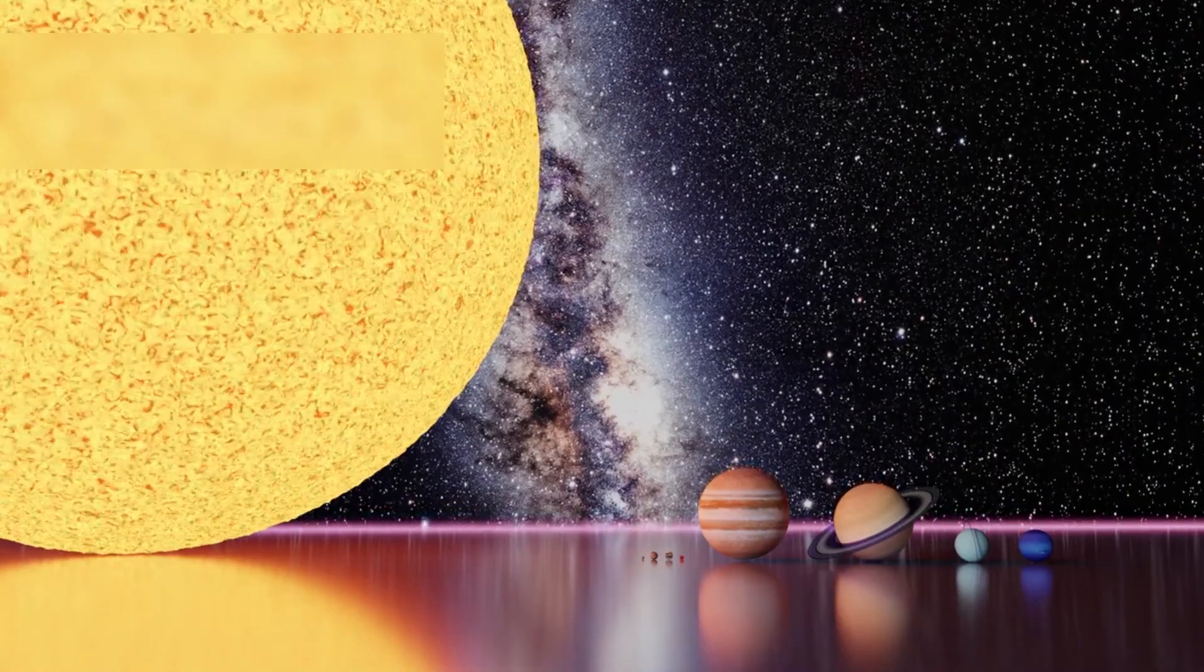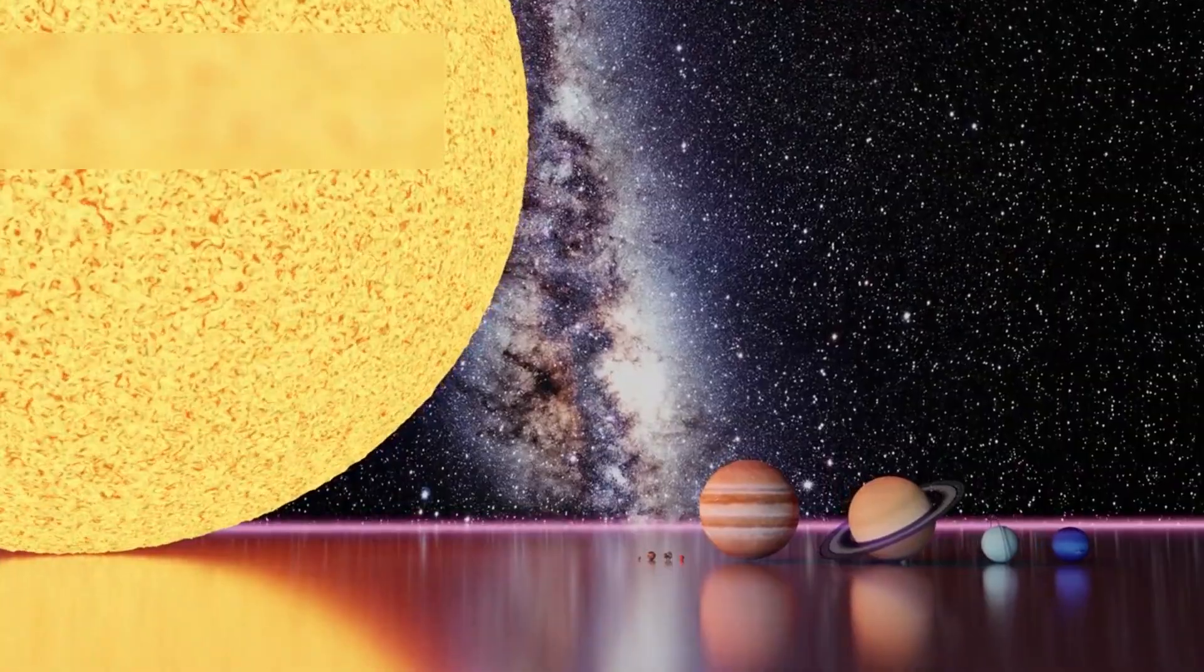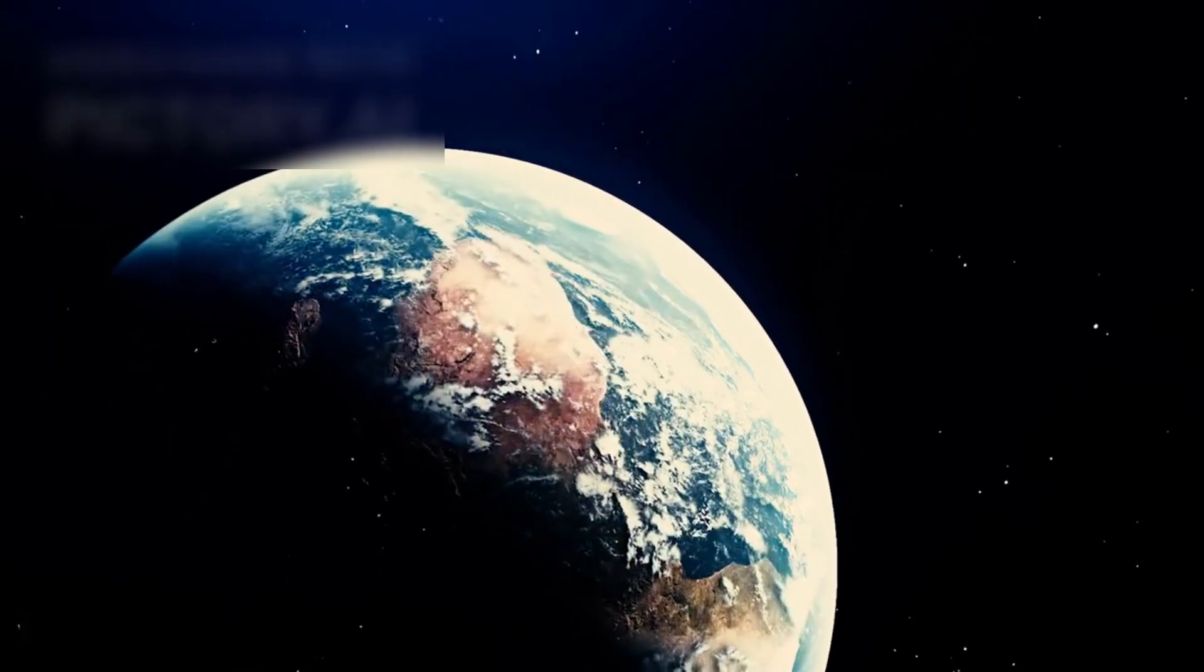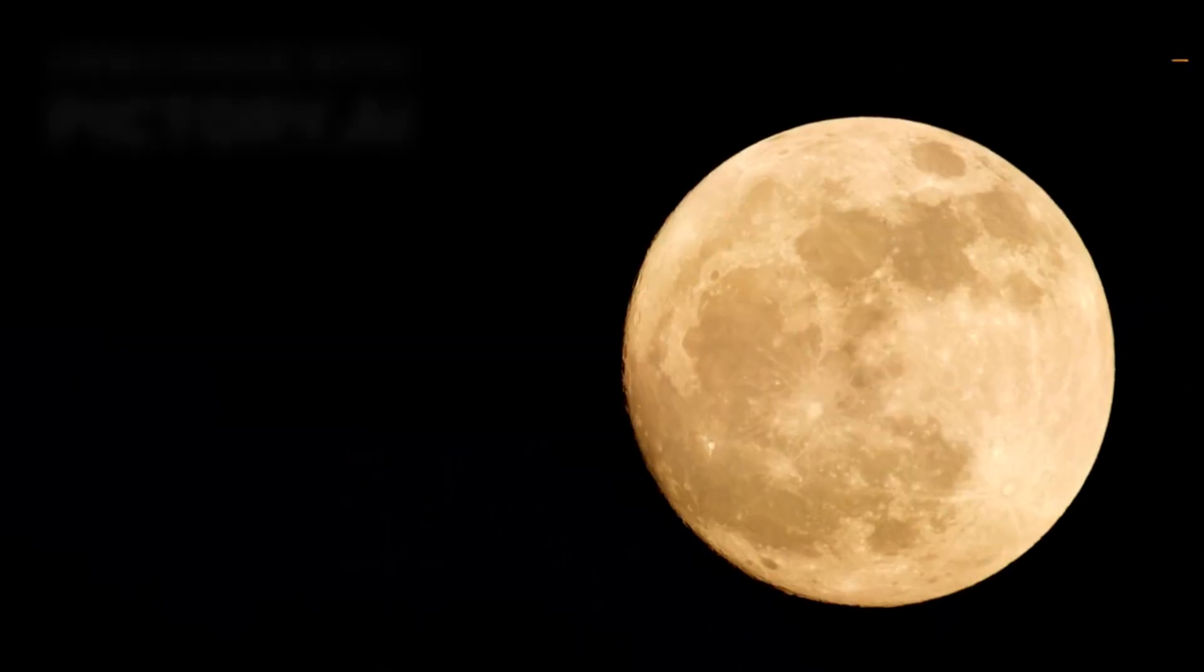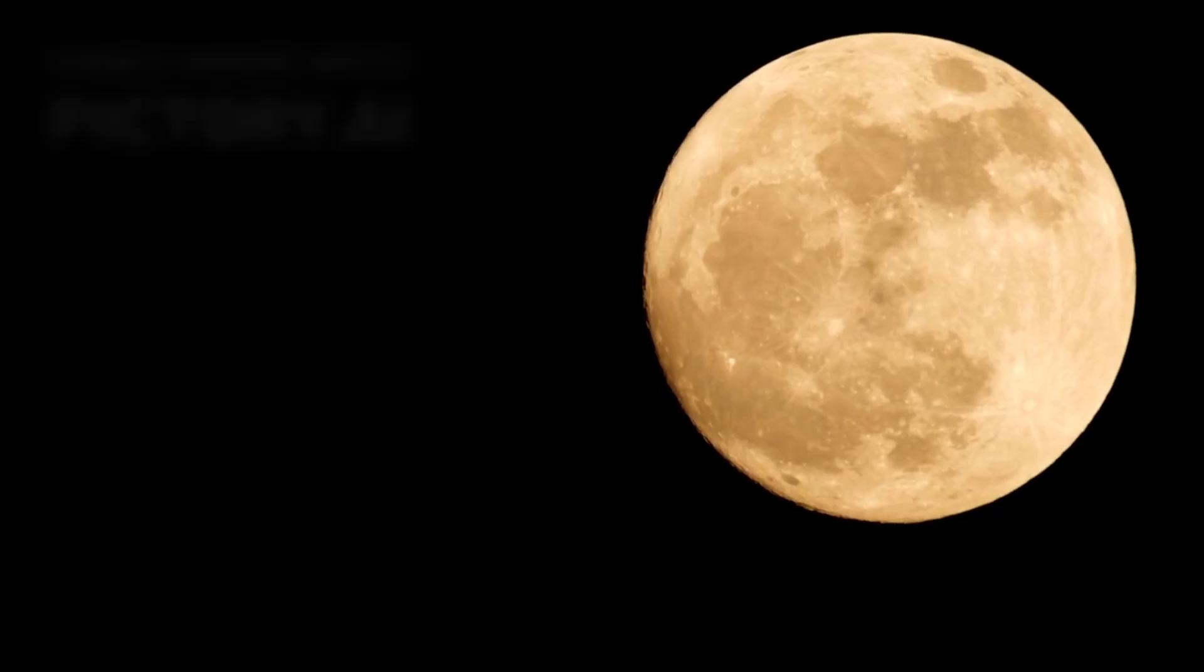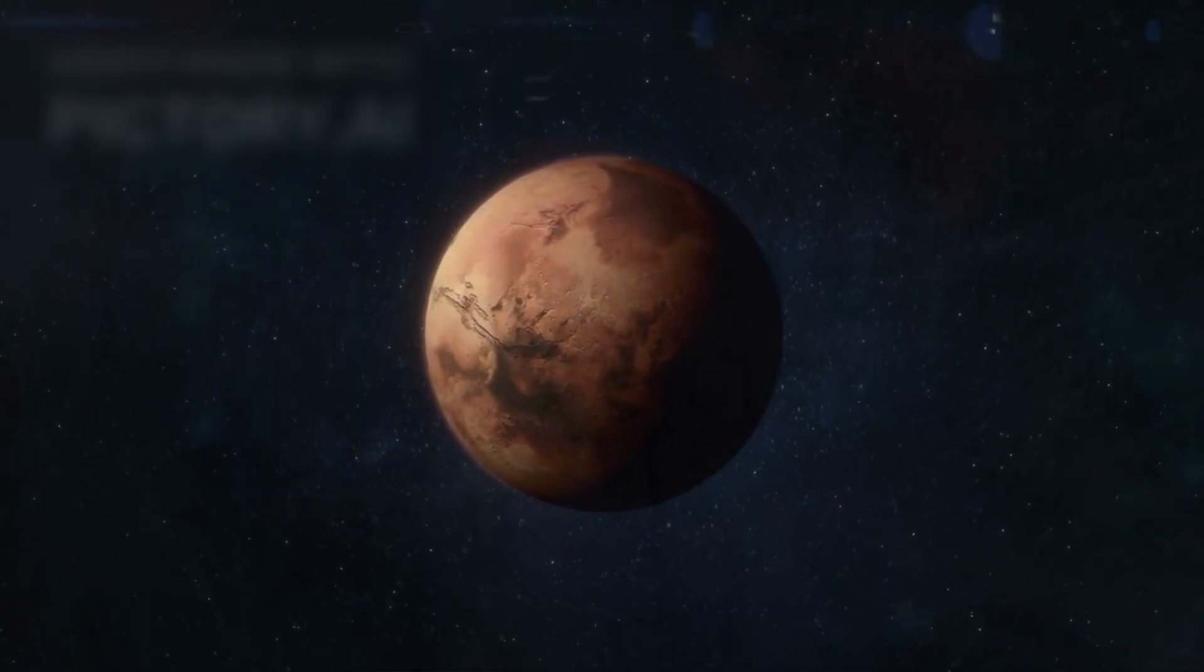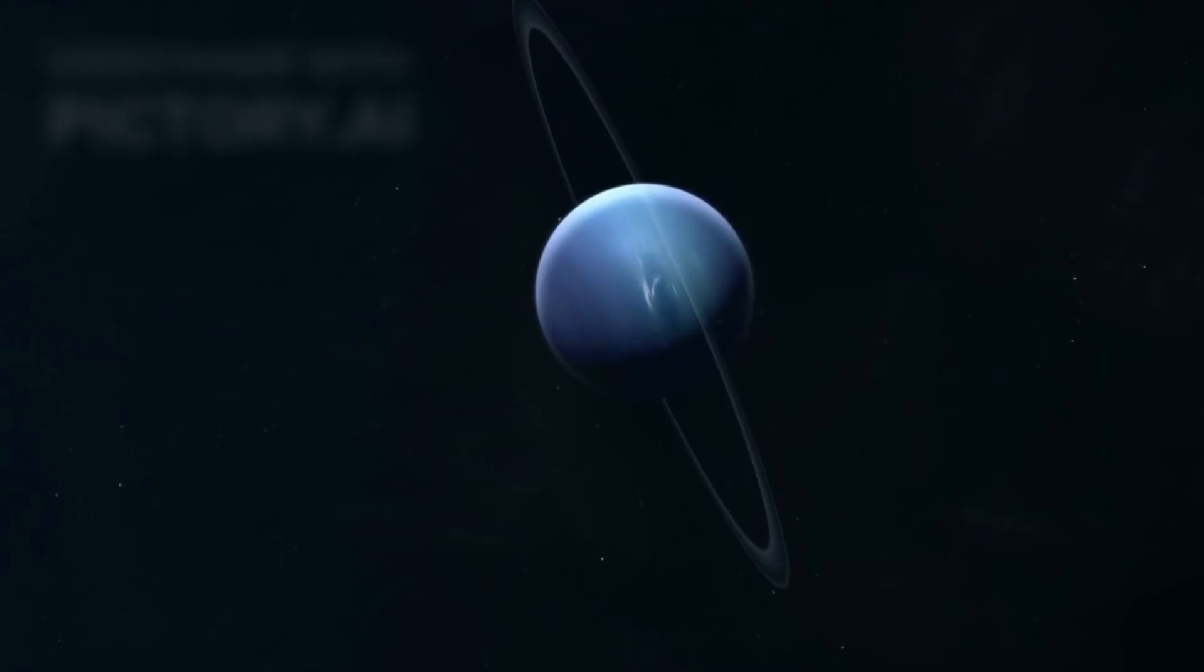To begin grasping the enormity of the universe, let's start by examining the scale of our solar system. If you were traveling at just 70 miles per hour, it would take around 15 days to circle the Earth's equator. At that same speed, reaching the moon would take about 5 months. A trip to Mars, even at its closest approach, would take nearly 63 years. But reaching Neptune would require an unimaginable 4,400 years.